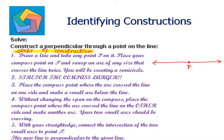Place your compass point on P and sweep an arc of any size that crosses the line twice. So you need to place your compass point on P, open the compass to a little radius, and make an arc over this line. It should cross this line twice — in short, you will be creating a semicircle. This arc can be over the line or below the line; that's up to you.